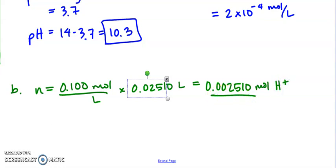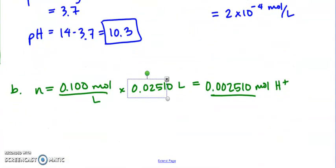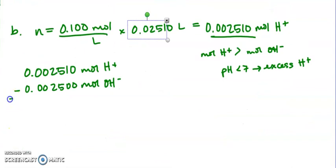So now we're going to compare this value with our amount of OH minus. And if I go back up, that's 0.0025. So now I have more H plus. So now my moles of H plus are greater than my moles of OH minus. That means my pH will be less than 7 because I have excess H plus. I have more H plus than OH minus. So now the question is how much? So 0.002510 moles of H plus minus 0.002500 moles of OH minus. So this gives me a difference of, same difference as before, but now this is moles of H plus.